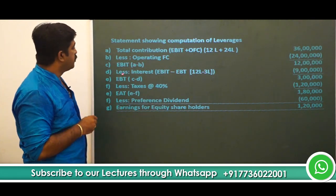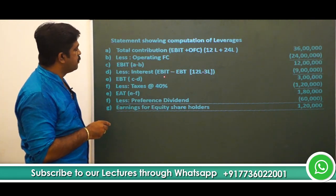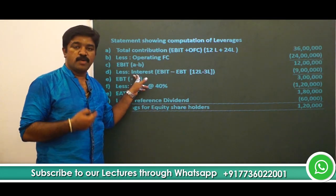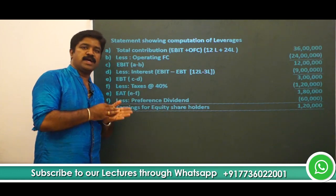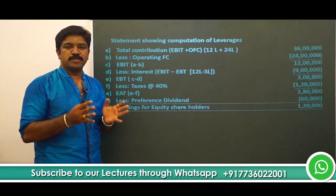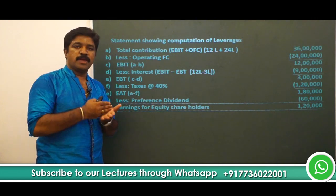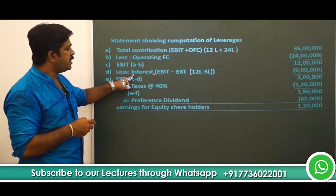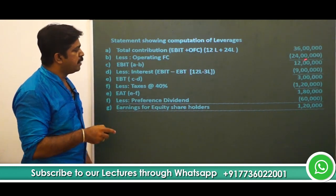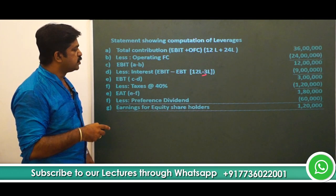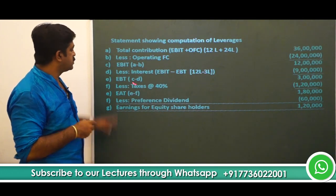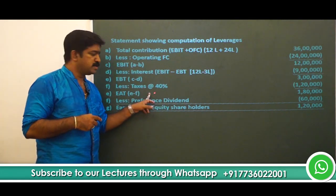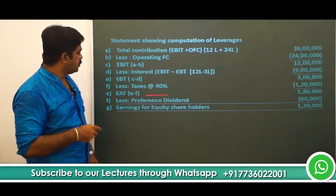From EBIT, deduct interest — that is EBIT minus EBT. Interest is not directly given in the question, but it is very simple: between EBIT and EBT, the only item possible is interest. So EBIT minus EBT automatically gives you interest. EBIT is 12 lakhs, EBT given in the question is 3 lakhs, so 12 minus 3 gives interest as 9 lakhs. We have EBT of 3 lakhs. Deducting taxes at 40%, that is 3 lakhs × 40% = 1 lakh 20,000.